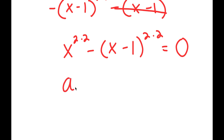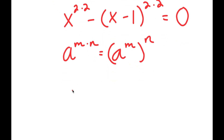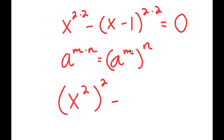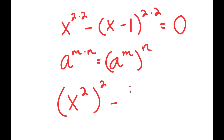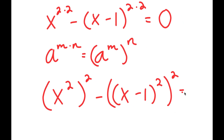Now, if I have something in the form a to the power of m times n, this is equal to a to the power of m to the power of n. So x to the power of 2 times 2 equals x squared to the power of 2, and x minus 1 to the power of 2 times 2 equals x minus 1 squared to the power of 2, which gives us an expression equal to 0.